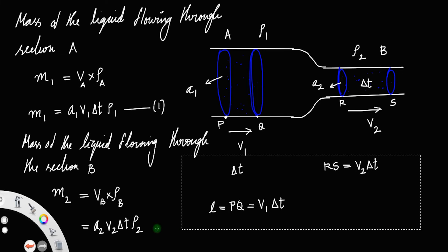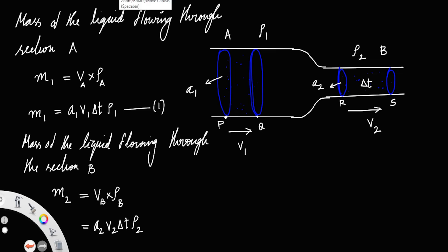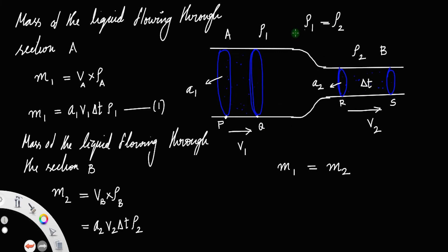By the law of conservation of mass, mass can neither be created nor be destroyed. So mass at section A equals mass at section B: m₁ = m₂. Also, the fluid is incompressible — incompressible means the fluid cannot be compressed, which means the density remains the same, that is ρ₁ = ρ₂. So we have a₁·v₁·Δt·ρ₁ = a₂·v₂·Δt·ρ₂.